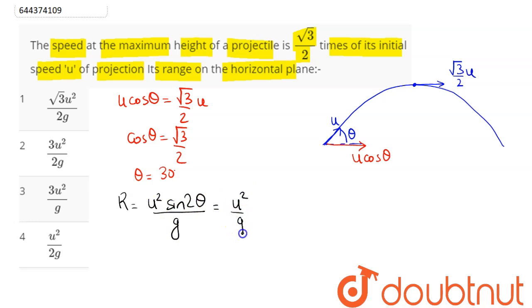can say u²/g times sine of 2 times 30 degrees, which is 60 degrees. Sin 60° as we know is √3/2, times u²/g, which is the range of the projectile, which here